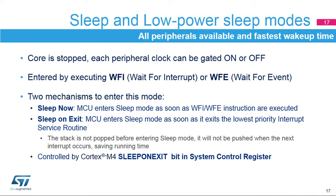Sleep and low-power sleep modes enable all peripherals to be used and feature the fastest wake-up time. In these modes, the CPU is stopped and each peripheral clock can be configured by software to be gated on or off. These modes are entered by executing the assembler instruction wait for interrupt (WFI) or wait for event (WFE). When executed in low-power run mode, the device enters low-power sleep mode. Depending on the sleep on-exit bit configuration in the Cortex-M4 system controller register, the MCU enters sleep mode as soon as the instruction is executed, or as soon as it exits the lowest-priority interrupt subroutine. This last configuration saves time and consumption by avoiding the need to pop and push the stack when exiting the low-power mode. However, all computations must be done in Cortex-M4 handler mode, because the thread mode is no longer used.